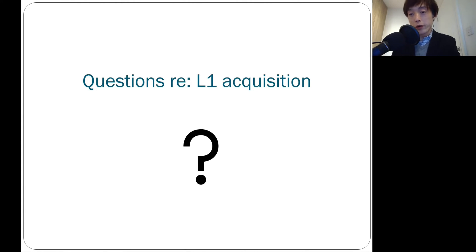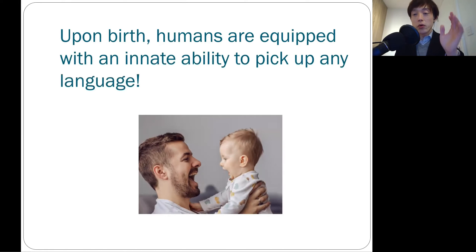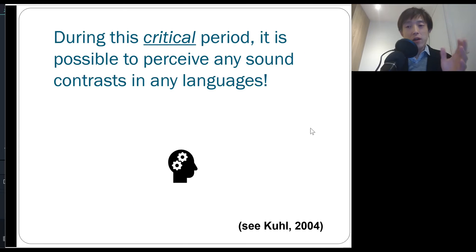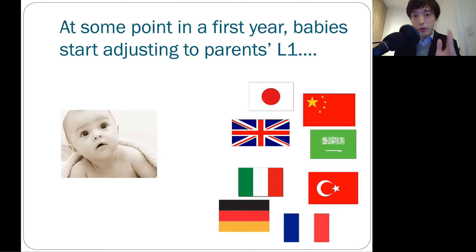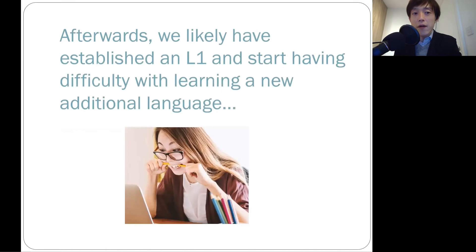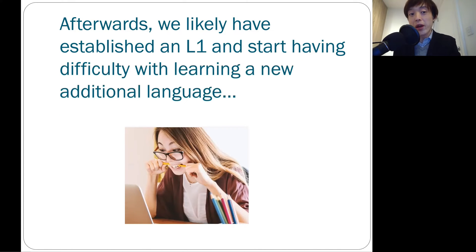In this video, I would like to give you an overall picture about first language acquisition. Upon birth, humans are equipped with an innate ability to pick up any language. Early in life, we have this very special time framework called the critical period. Within this critical period, you're able to perceive any sound contrast in any languages possibly existing on the earth. This really depends on your linguistic environment. But at certain points in the first year, you have somehow made a decision to become a native speaker of a particular language, especially if your parents are speaking the exact same language. And afterwards, we likely have established the first language and start having difficulty with learning a new, additional language, because your default system — L1 — is always affecting your second language.